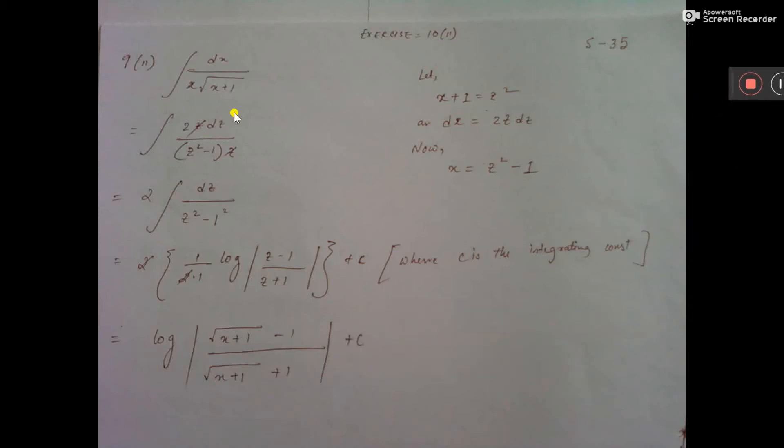Here, you can consider x plus 1 equal to z square, because within square root you should consider z square so that the sum will be easy.